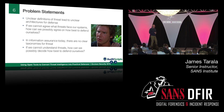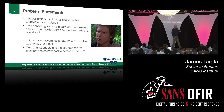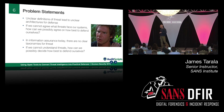Unclear definitions of threat lead to unclear architectures for defense. If we don't know what we're defending against, it's very difficult to agree on how to defend ourselves. There are also very limited taxonomies for threat. As of about a year and a half ago, there were literally zero taxonomies of threat you could get hold of. Over the last 18 months, there are now three — we run one, NISA runs one, and MITRE has done additional research.